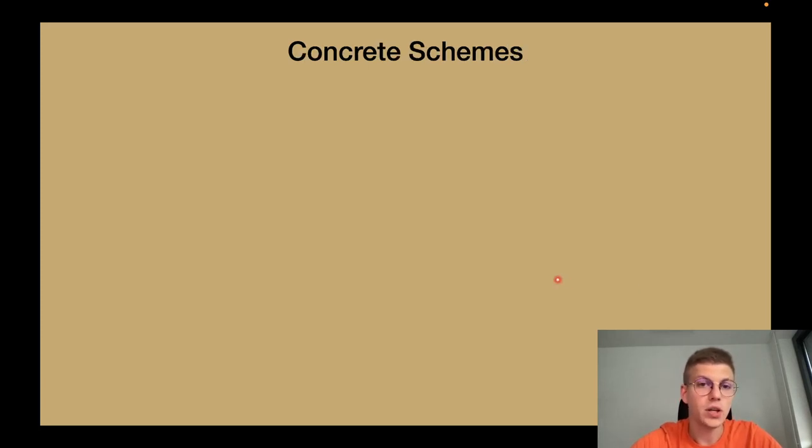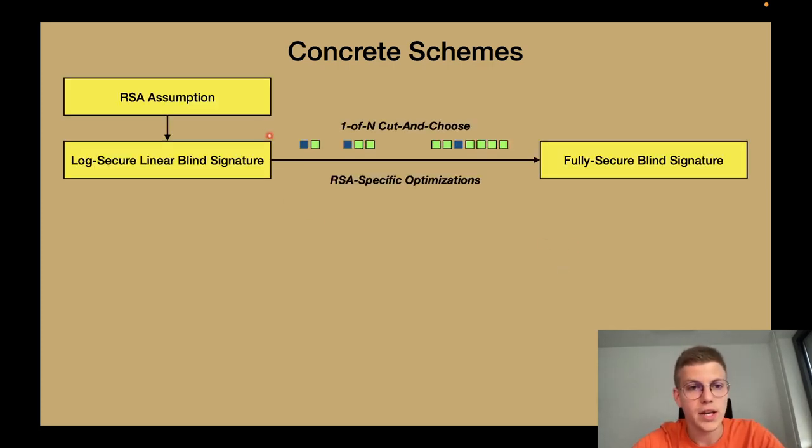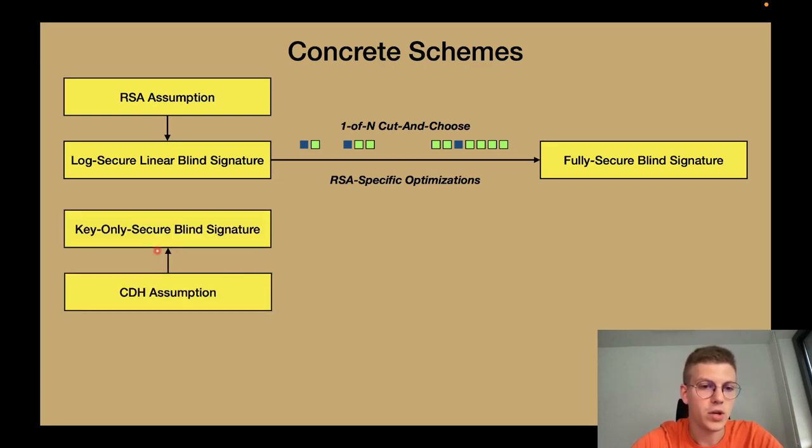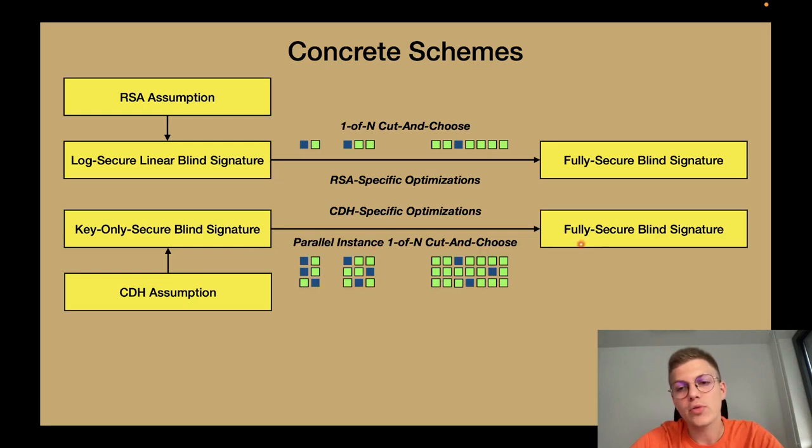What we do is we construct two concrete schemes in the second part of our work. The first one is based on the RSA assumption and we instantiate this framework with some specific optimizations for RSA, for example using trapdoors to further improve the communication complexity. Then we have a second construction where we start with a key only secure blind signature scheme, PLS blind signatures, and transform it into a fully secure blind signature scheme with a variant of this boosting transform that now also works for key only secure schemes. We call this parallel instance cut and choose. And we further optimize this using CDH specific optimizations such as aggregation.